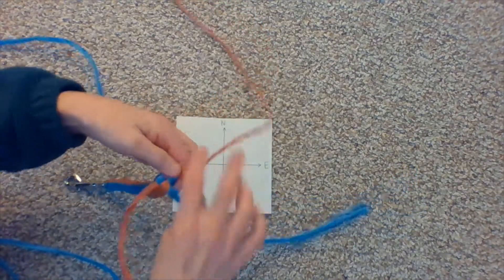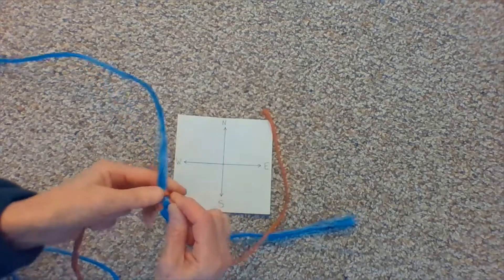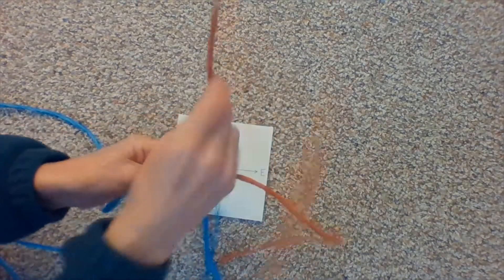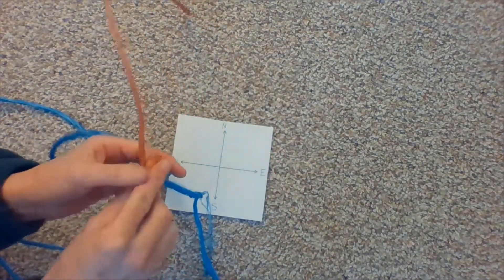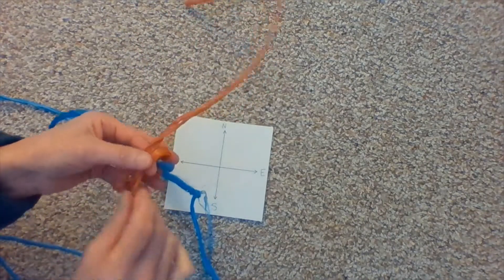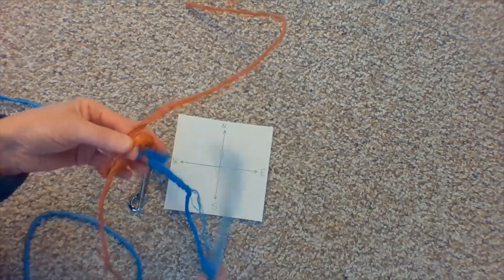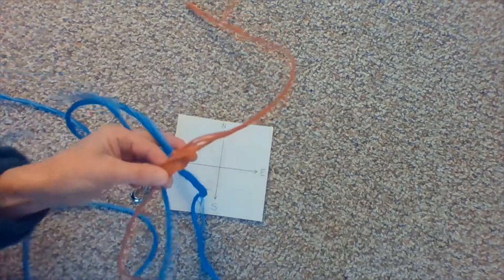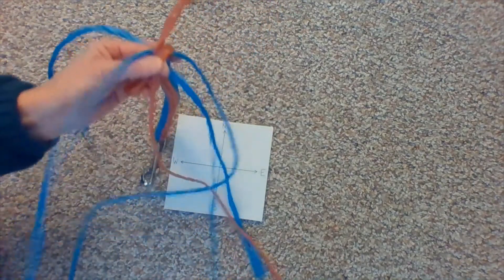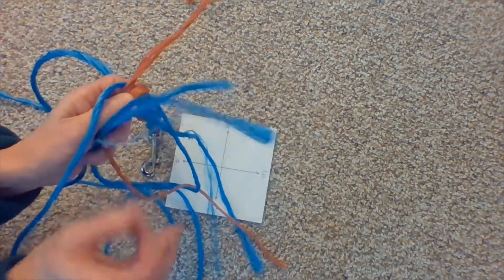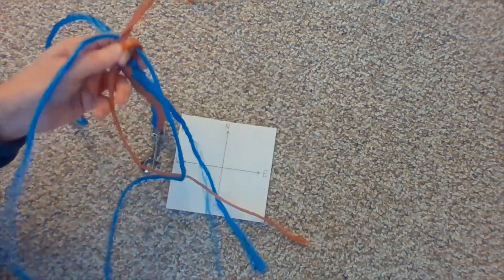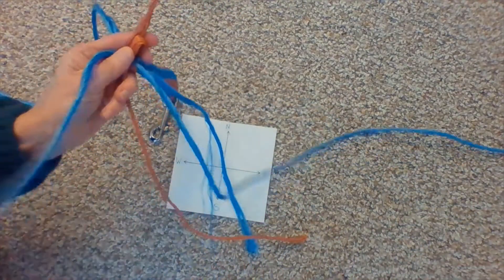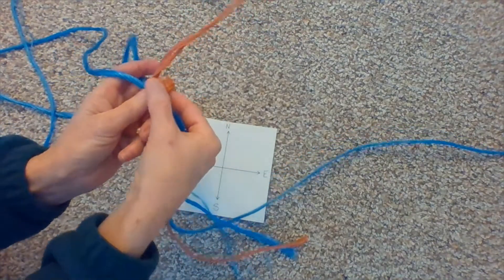Then, I'm going to make the loops with the orange, the north-south loops. And I'm going to thread the new piece of blue through the loop, both loops, so that it will just stretch across. And I'll find my center point by pulling both of the ends together. And then, just lay it down alongside the blue that I have been working with.